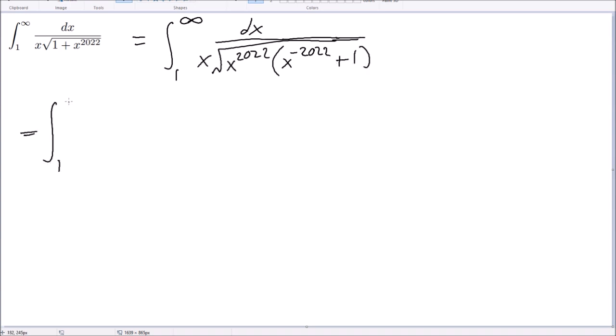So now we have 1 to infinity. So let's see, dx, this becomes, so this is like 1012 now.